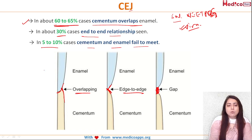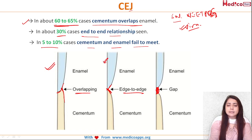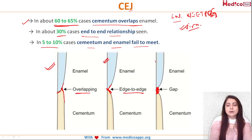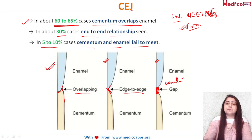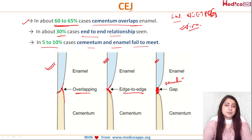So the most common variety is the overlapping one, then second is the edge-to-edge or end-to-end relation, and third is the gap. In the gap type, sensitivity is also increased in such cases.